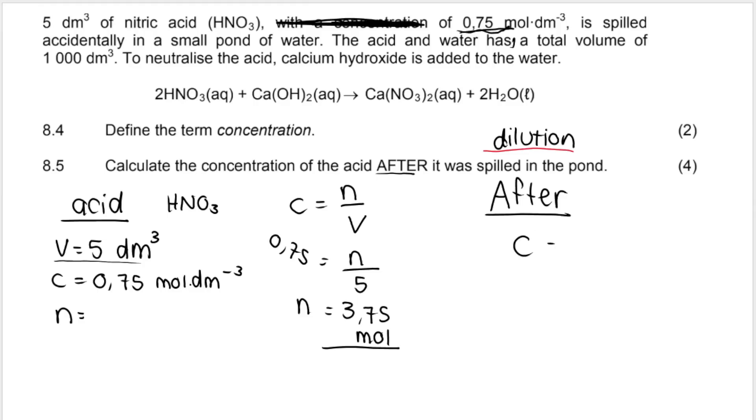So this is the number of moles. It's going to stay the same after we spill it in the pond. So I'm going to say after C is equal to N over V. We're looking for the new concentration. So I'm looking for C after I spill it. N is going to be 3.75. That does not change. But my volume is a new volume. It's this volume. Read the question carefully. It says volume of 1,000 when the acid and the water are together. So this is 1,000. And we get 3.75 times 10 to the negative 3 or 0.00375. Remember your units.